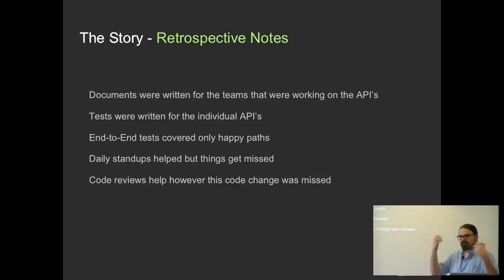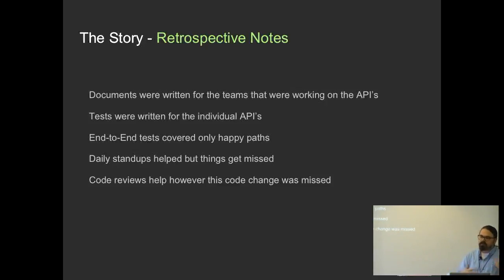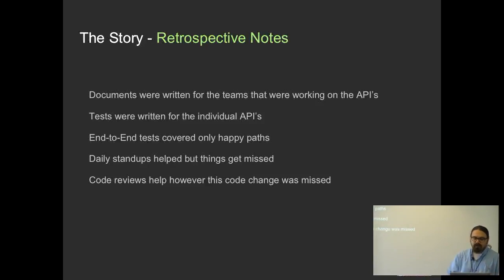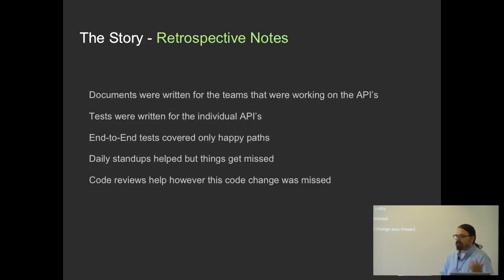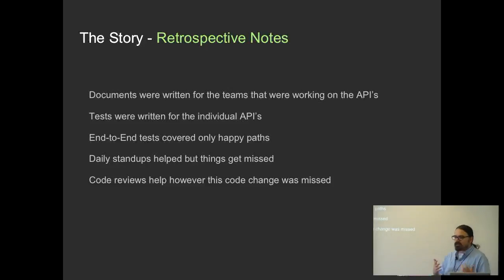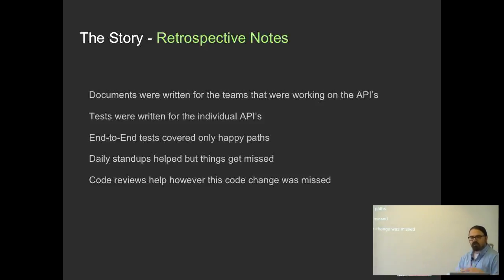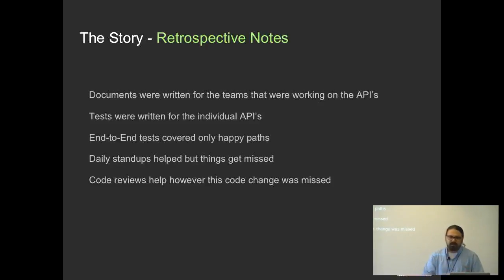They had a retrospective. Like every good Agile team, they sat down and asked how they could avoid this in the future. They talked about the good things they did: they had extensive documentation for the APIs, and each API had its own unit tests, which is great. They also discussed end-to-end tests.